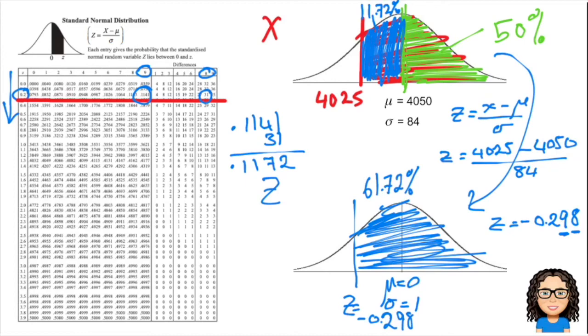So there's our probability. Now what we need to do is a calculation. So we have found the probability that x is more than 4025. That's the same as the probability that z is more than negative 0.298, and that is the value of 0.617.